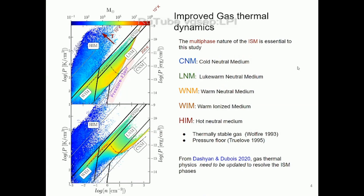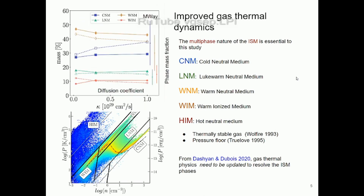One very new aspect of our simulations is the gas physics. Other simulations typically impose a pressure floor — a boundary below which gas pressure cannot fall — which effectively erases the cold neutral medium phase. This is the phase where stars are born, so those simulations end up forming stars in odd places. We updated the gas physics by removing this pressure floor so we can populate the ISM phases in a more consistent way, validated against higher resolution simulations.